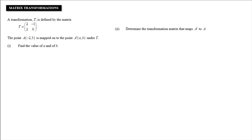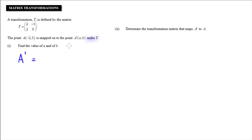Let's jump straight into it and get used to some of the language used when we talk about this. We have a point and want to apply a couple of transformations to it using matrices. Transformation T is defined by the matrix T equals 2, minus 1, 2, 0. Point A is mapped onto point A prime under T. The first thing we want to do is find the values of A and B. We know that A is mapped under transformation T, and whenever a point is under a 2 by 2 matrix transformation, we pre-multiply that point by that matrix. So image A prime equals T times column matrix A.